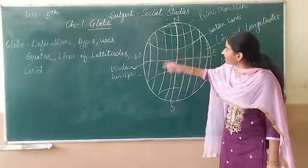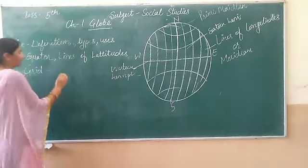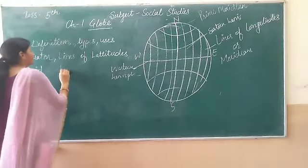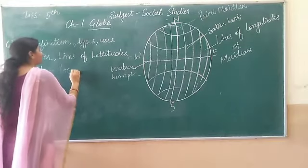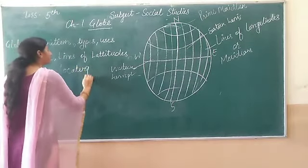A grid helps in locating places. It helps us find the location of any place — grid helps us in locating places.